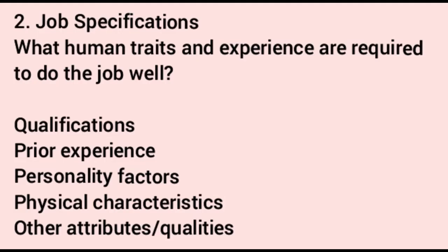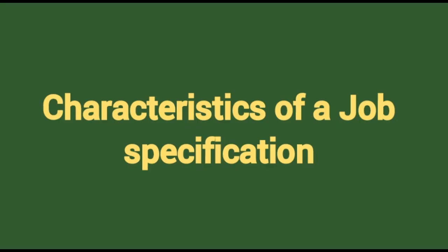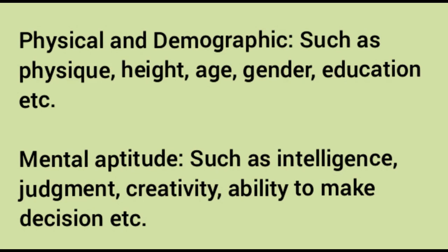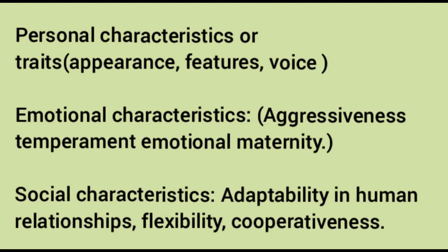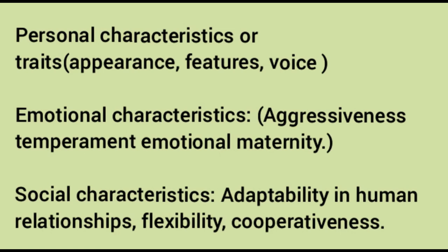Job specification describes what human traits and experience are required to do a job well — qualifications, prior experience, personality factors, physical characteristics, and other attributes. Characteristics of job specification include physical and demographic factors such as physique, height, age, and gender; mental aptitude such as intelligence, judgment, creativity, and decision-making ability; personal traits such as appearance, voice, and emotional characteristics; and social characteristics such as adaptability, flexibility, and cooperativeness.